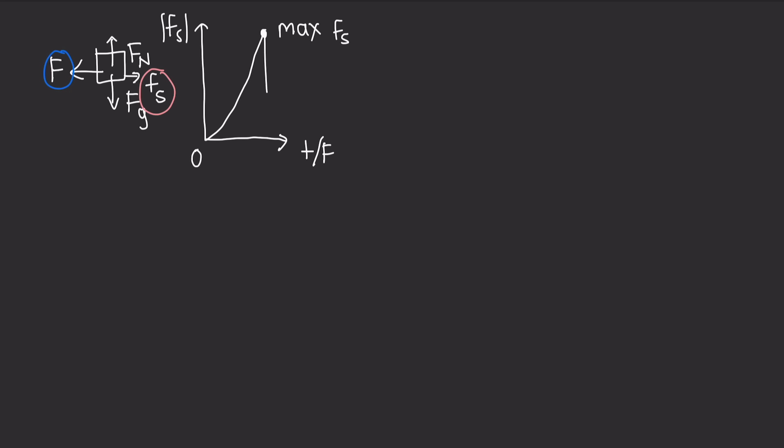Usually, based on the graph here, the kinetic frictional force over here is less than the maximum magnitude of the static frictional force. So this means if you want to move the block across the surface with a constant speed, you must usually decrease the magnitude of your applied force once the block begins to move.